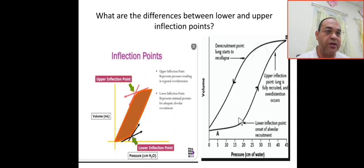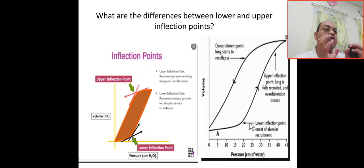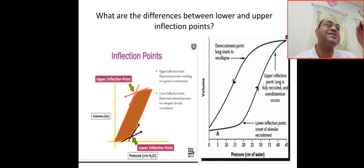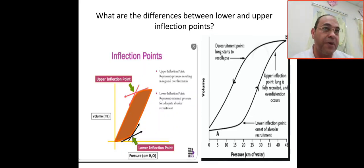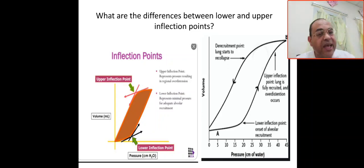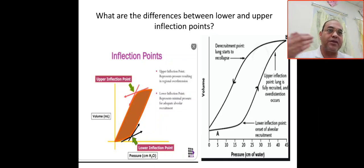Looking at the curve, this is the lower inflection point — also called the opening pressure. This is the point of onset of alveolar recruitment. Giving minimal pressure gives you a huge volume. Setting PEEP at the level of the lower inflection point is recommended to optimize alveolar recruitment and prevent repeated opening and closing, preventing shear injury, barotrauma, atelectrauma, and biotrauma.